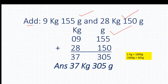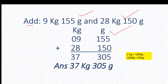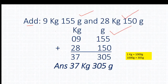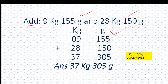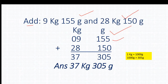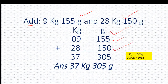Our first step is to write the unit. I have written kg and gram. Next step is to write the digits in the right column. I have written these digits here — the first weight here and the second weight here.